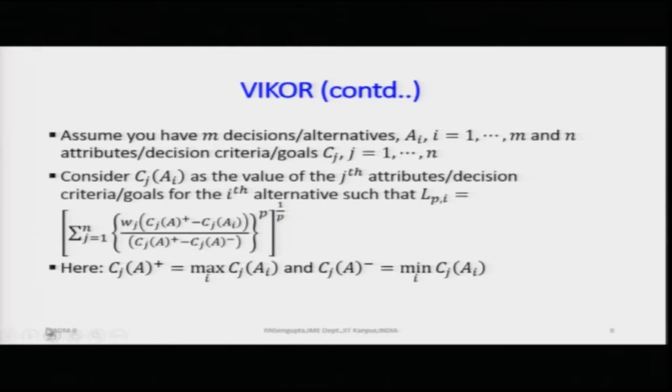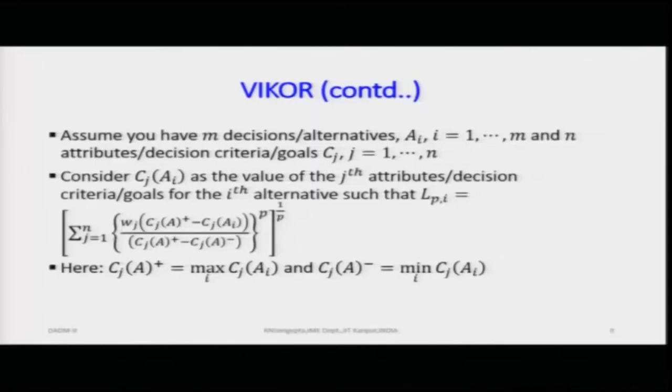C_J(A+) is taken as either the row or column maximum across all C_J(A_i) values, and C_J(A−) is the minimum. You are normalizing or taking the ratio relative to the max-minus-min range, effectively placing each value on a real line scaled between the max and min, and doing this for each J from 1 to N.